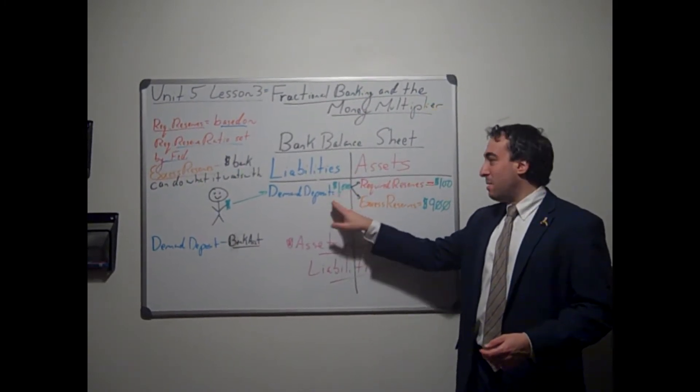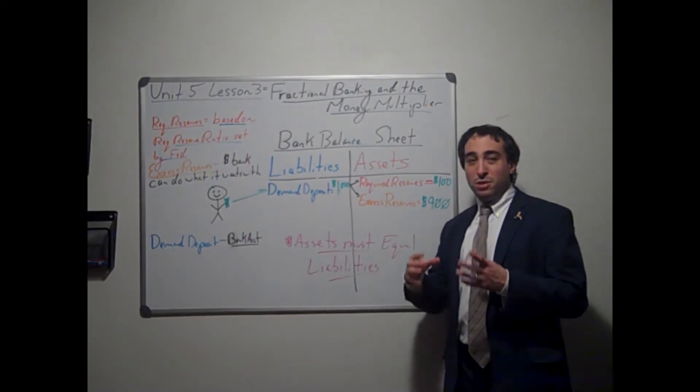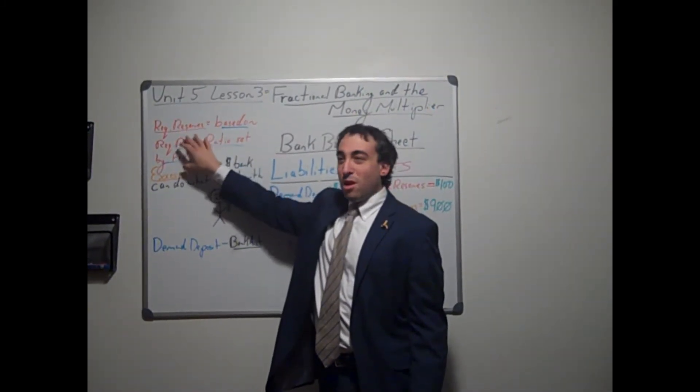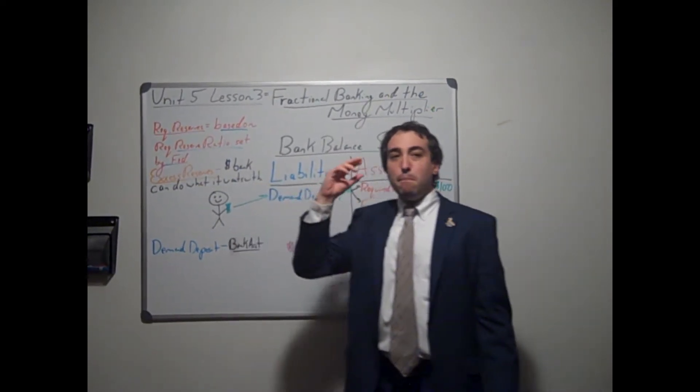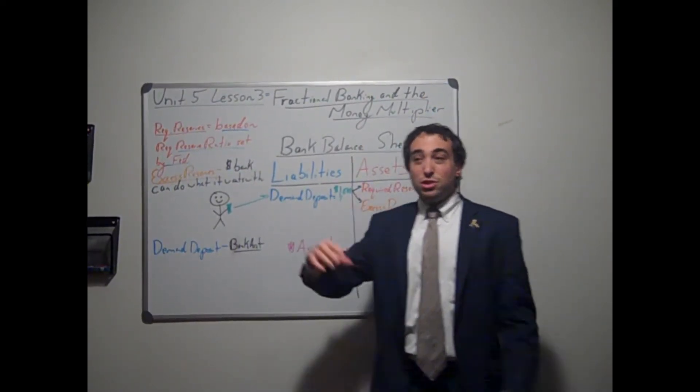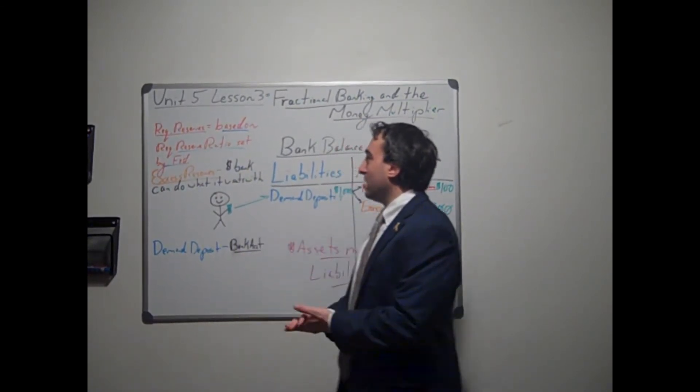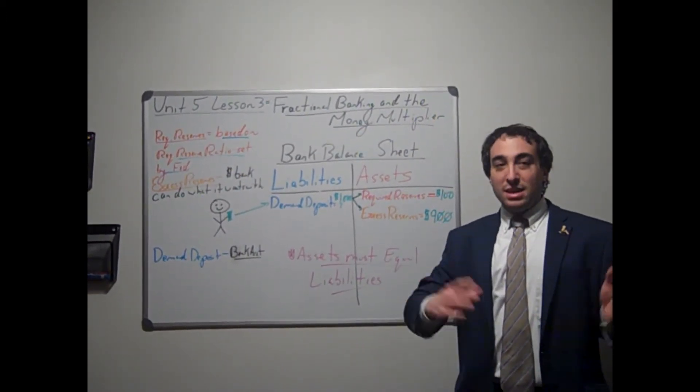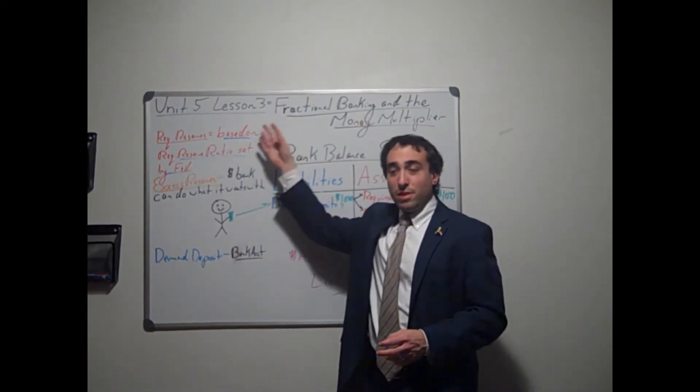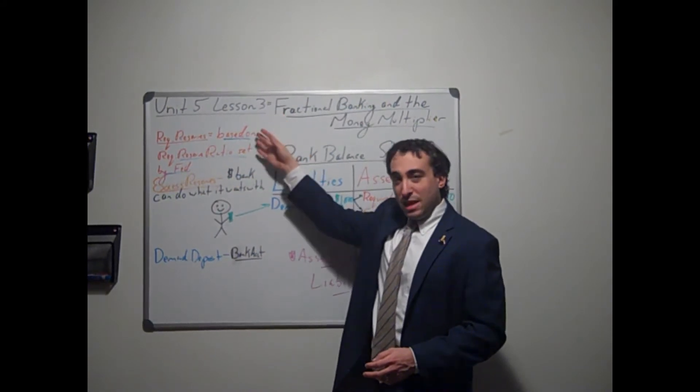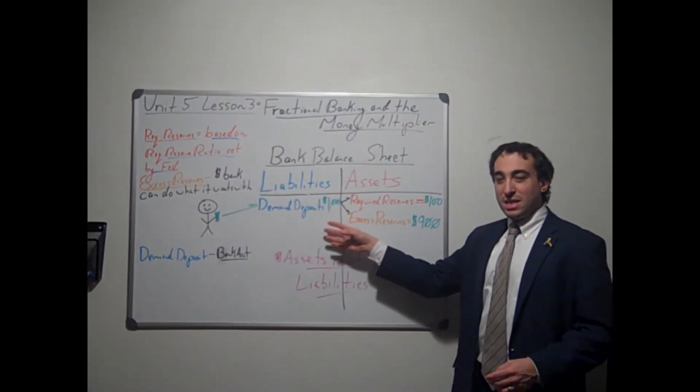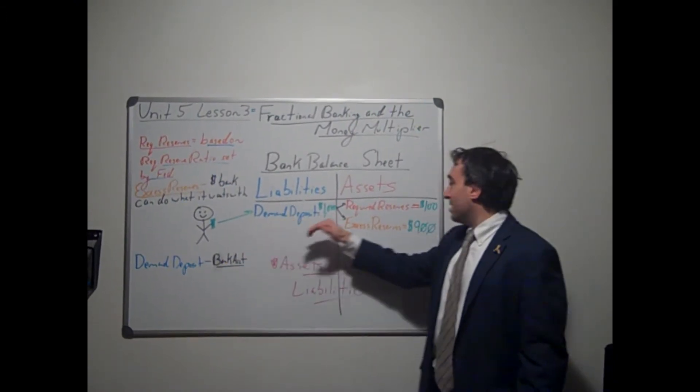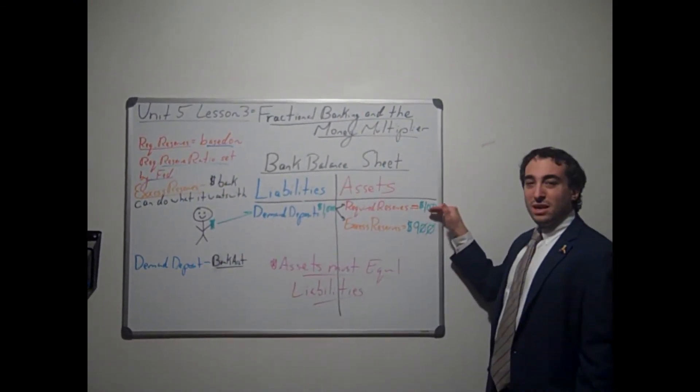So demand deposits are liabilities to the bank because at any time they can be withdrawn by us, and therefore they're a risk to the bank. But initially when that money is deposited, so that $1,000, how does the bank break it up? Remember, if that bank is a member bank of the Federal Reserve, that bank must follow the reserve requirement ratio. So a portion of that money must immediately go into required reserves. That means the bank cannot touch that money. It is based on the required reserve ratio set by the Federal Reserve.